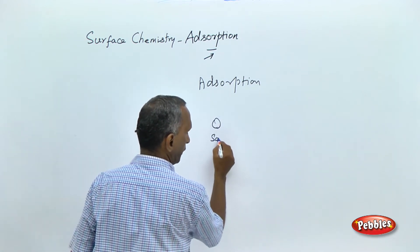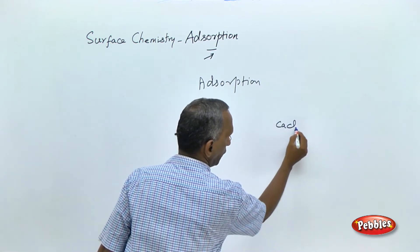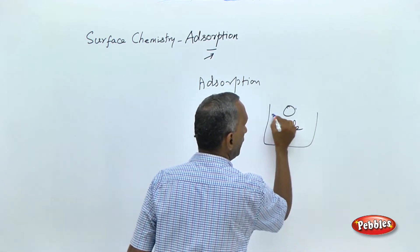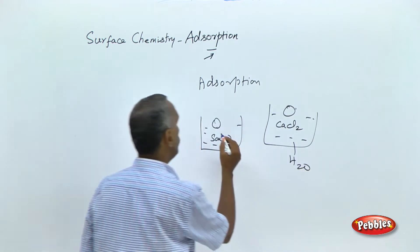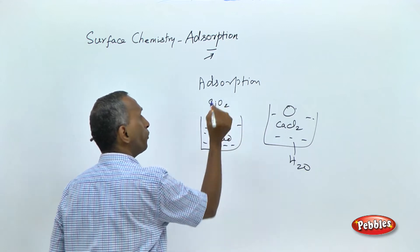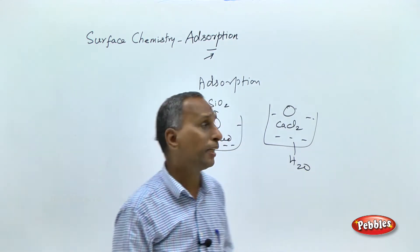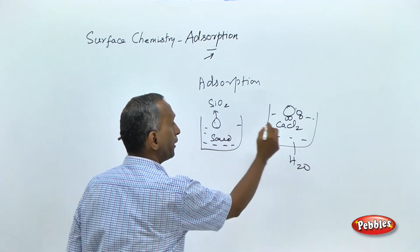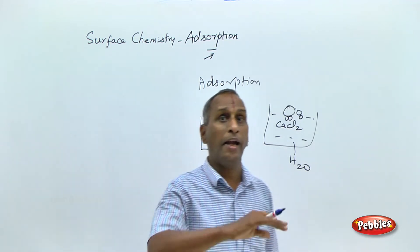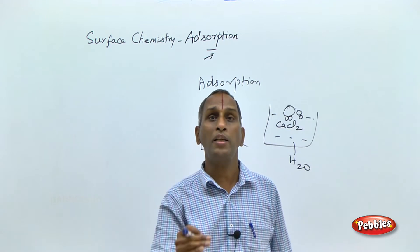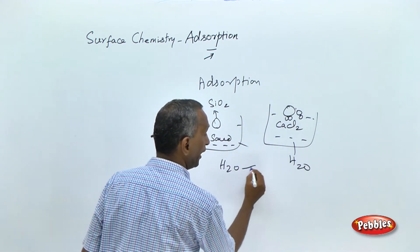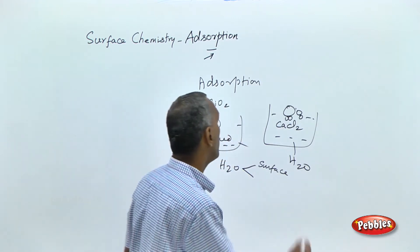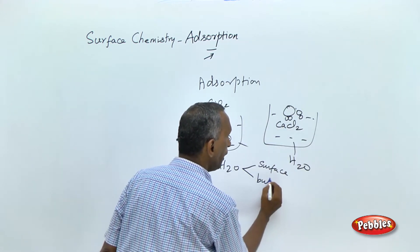Let us consider sand particles and calcium chloride particles put in a system of water. Water composition is H₂O, into which we put two different chemical particles. Common sand whose composition is silicon dioxide, and another is calcium chloride. If you put sand and calcium chloride particles in two different beakers containing water and take out the particles, we can observe water particles in both cases. But in the case of sand, water particles are found only at the surface, whereas water particles are found in the bulk of the calcium chloride particles.